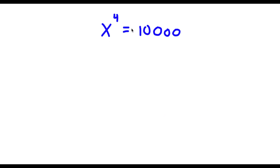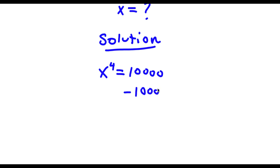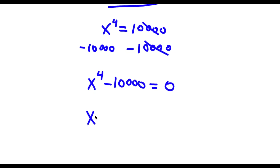Alright, so I have x to the power of 4 is equal to 10,000 and I want to find the value of x. First I subtract 10,000 from both sides, leaving x to the power of 4 minus 10,000 equals 0. Now I can rewrite x to the power of 4 as x squared, all to the power of 2, since 4 equals 2 times 2. And 10,000 I can rewrite as 100 squared. That equals 0.